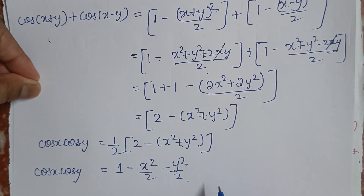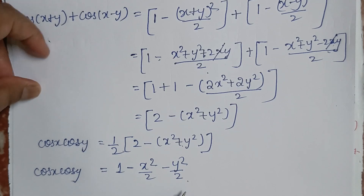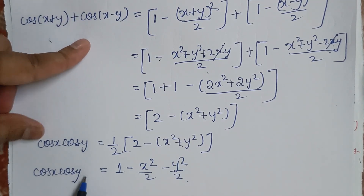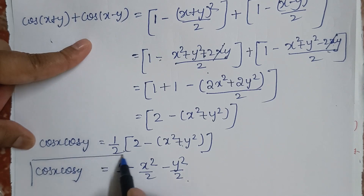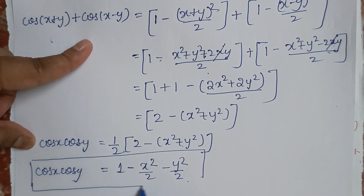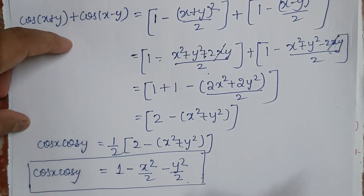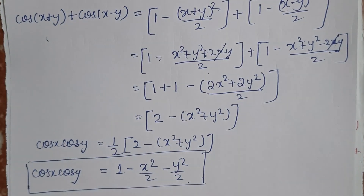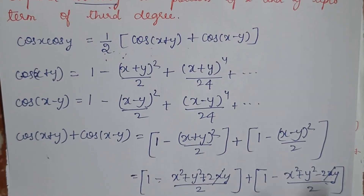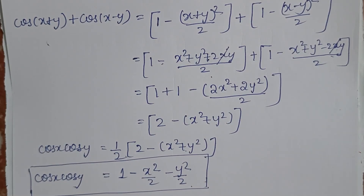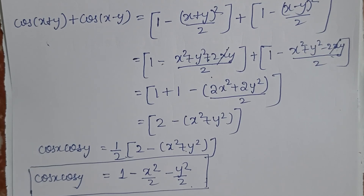Hence this is the expansion up to degree 3. Since cosine is an even function, degree 3 terms are not possible, so the solution goes up to degree 2. Thank you so much for watching. If you found this video helpful, do not forget to share it with your friends. Support me so that I can support you!